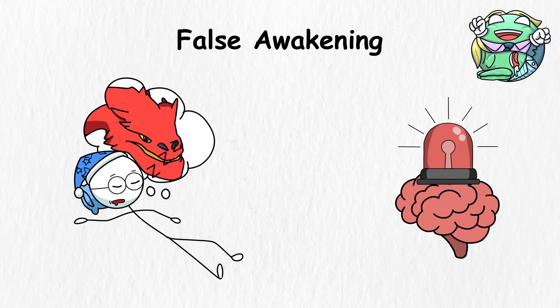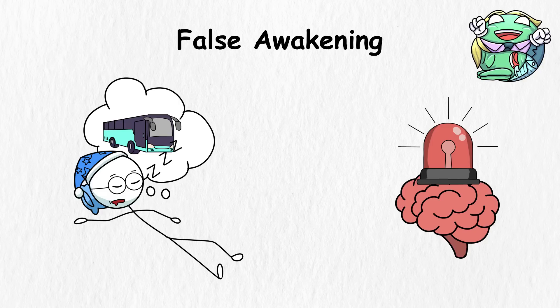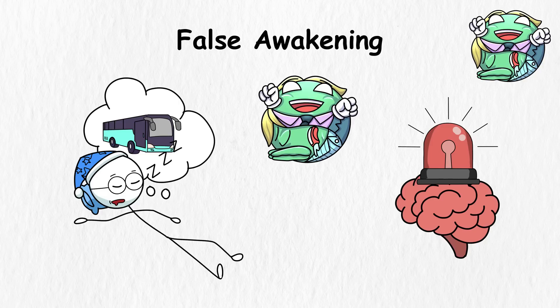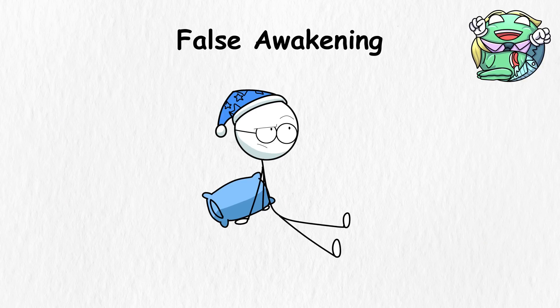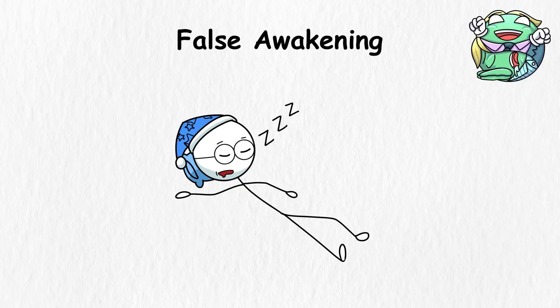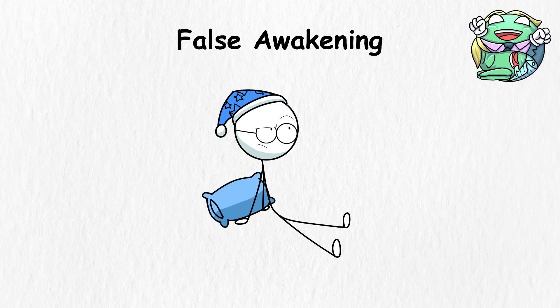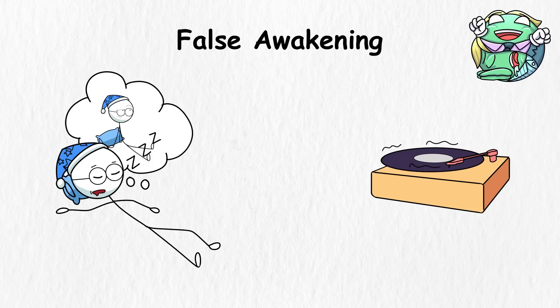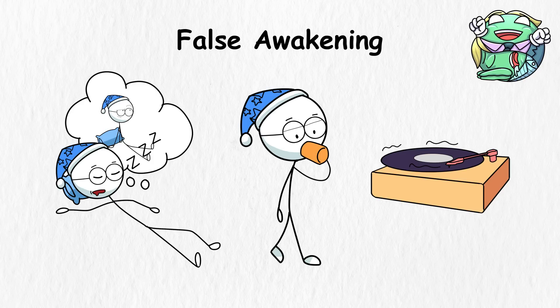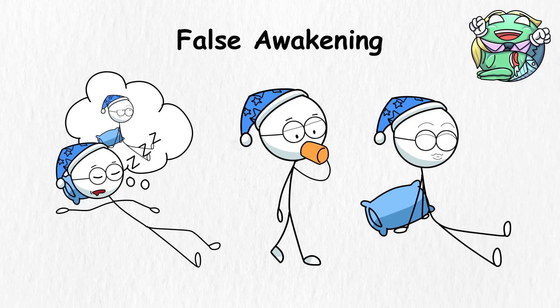Instead of you fighting dragons in your sleep, your brain forces you to go to work in slumberland. There are also instances when false awakenings can happen in cycles. You often wake up multiple times, only to discover you were just dreaming. When you go back to sleep, it happens again. It's like your body is a broken record player stuck in an infinite loop, making it hard to figure out if you've already woken up for real. So you might want to take it easy on the coffee and try calming your mind before sleeping.